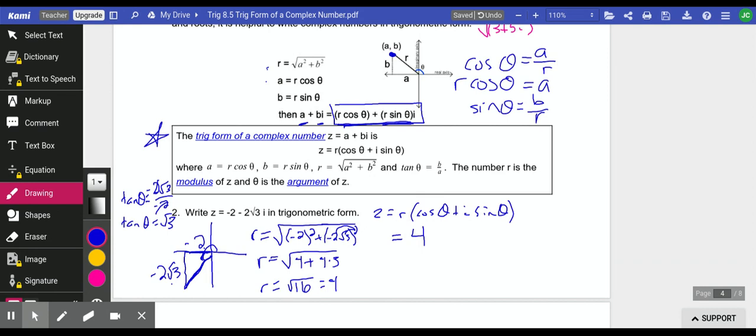You can do that in your calculator. Inverse tangent, you may recognize this. If you put it in your calculator, it's going to tell you that that is 60 degrees or pi over 3.